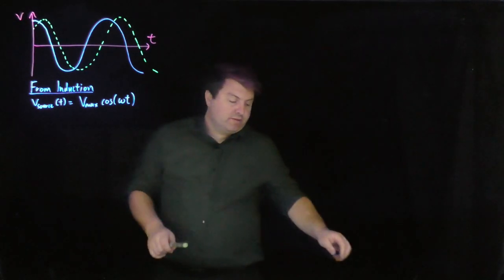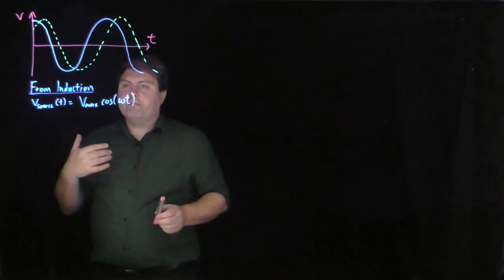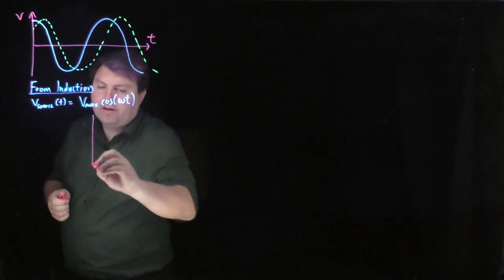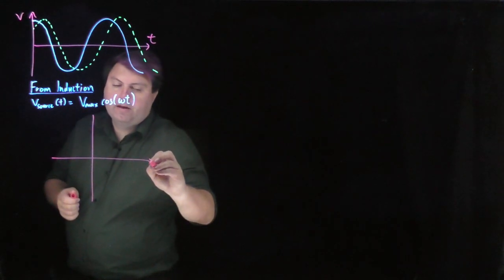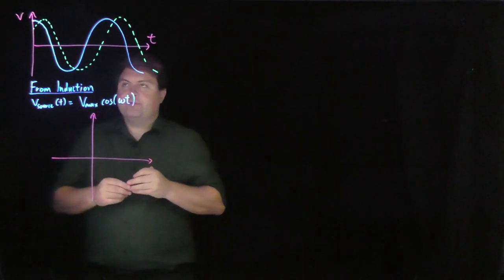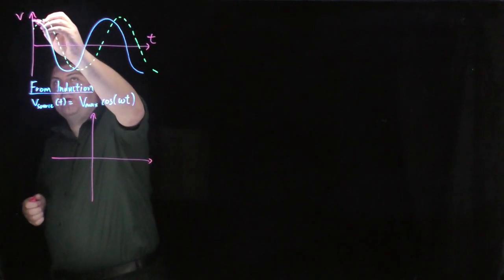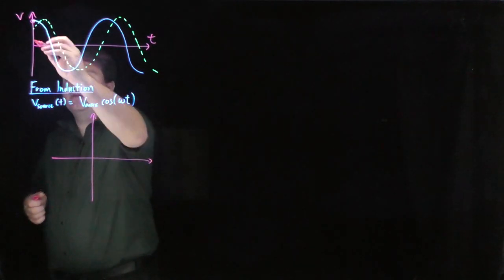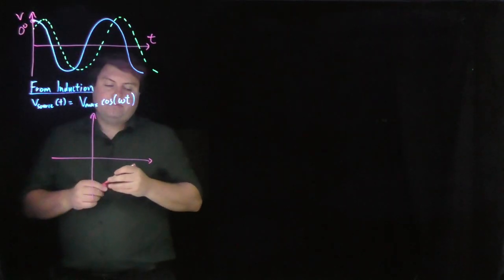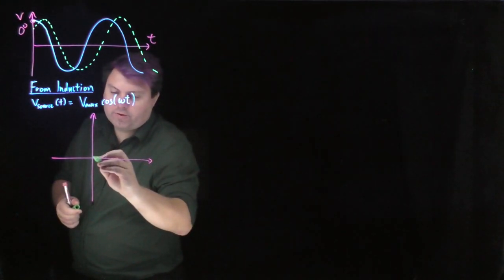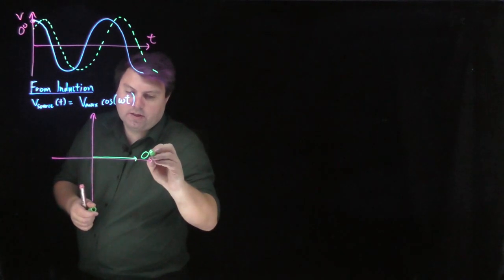Instead, what we can do is we can represent where in this angle we are with an angle on a Cartesian plane. So, for example, at this point, we are at 0 degrees. If we're at 0 degrees, we would draw 0 degrees.